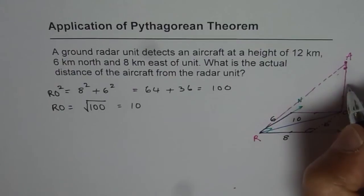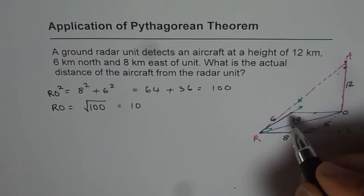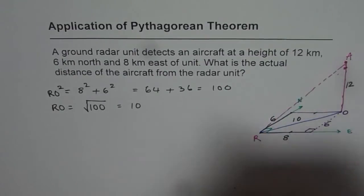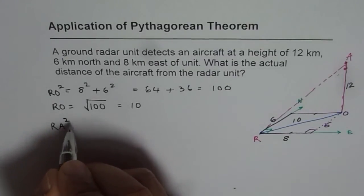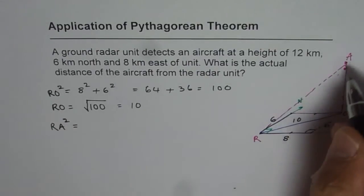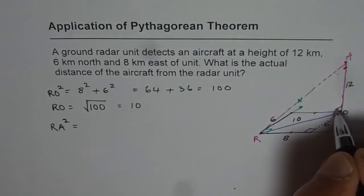Now we are given the height is 12. So we have to find distance RA. So RA, using Pythagorean theorem once again, we get RA square since this is right angles.